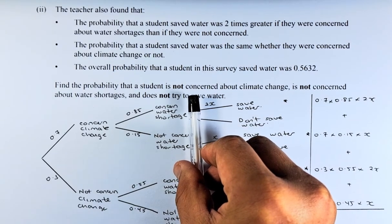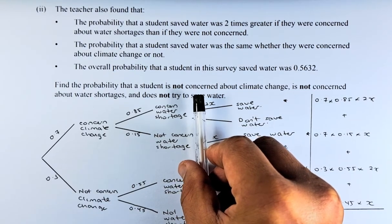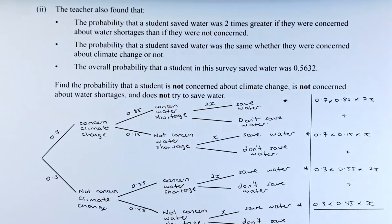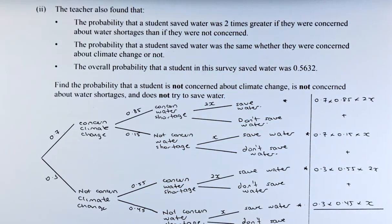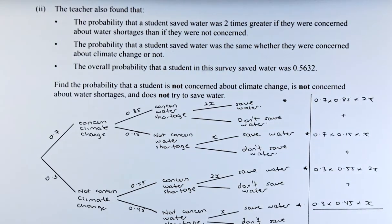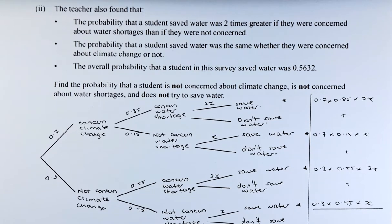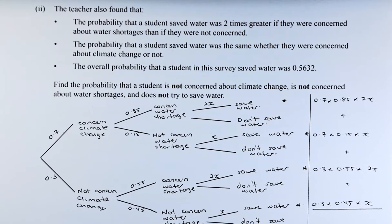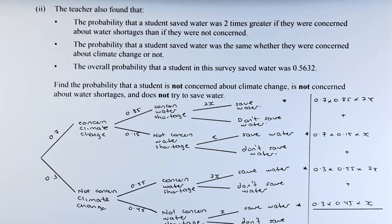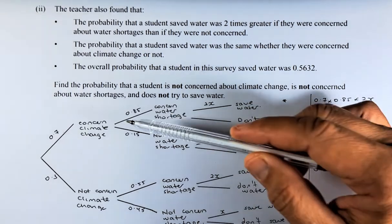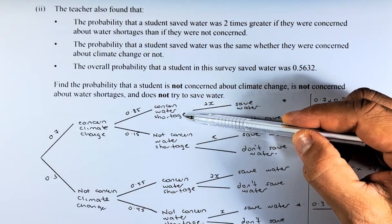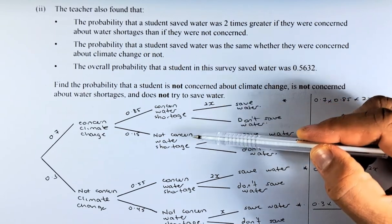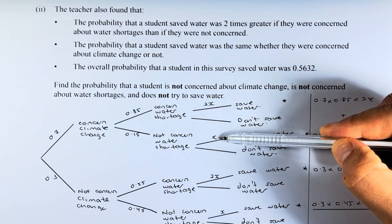An extension of this probability tree is based on the statement given in the next part. The question is, the probability that the student saved water was 2 times greater if they were concerned about water shortages than if they were not concerned. If they were concerned about water shortages, the probability is 2 times. If they are not concerned, it's only 1 times represented by x.